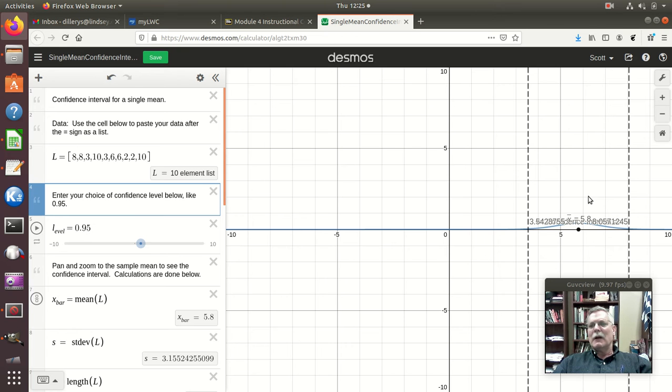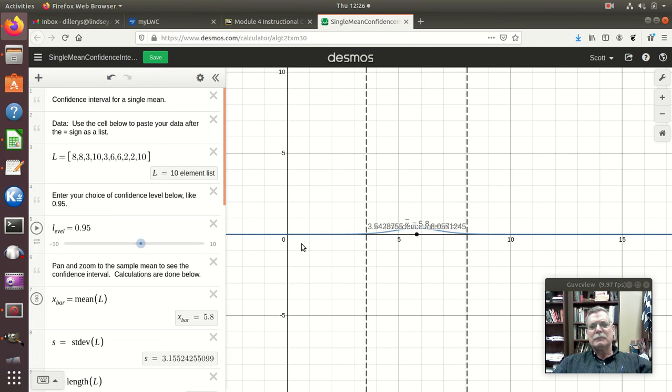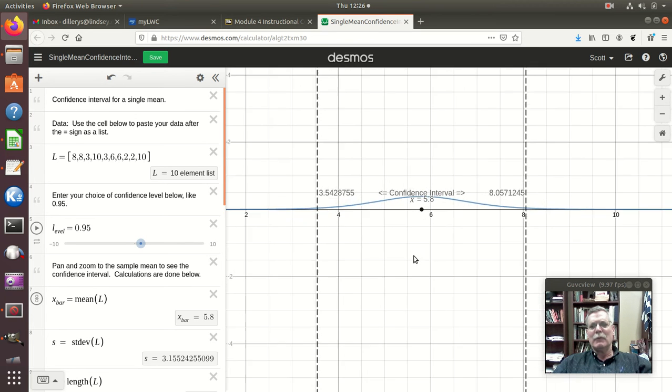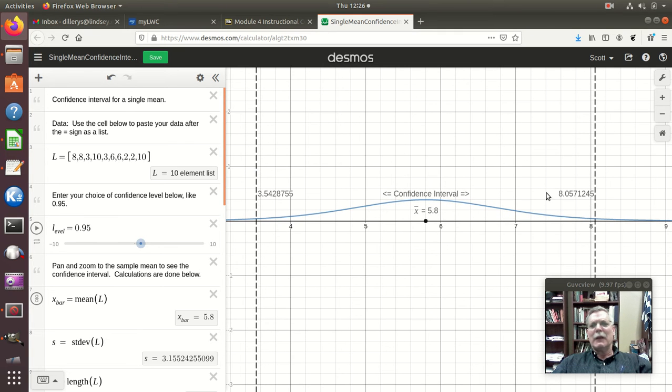And there's my confidence interval. And I may have to, you'll probably have to scroll to whatever the mean is, but see here, the mean is 5.8, so that would tell me where to try to scroll to. And pan and zoom, I guess, is really the better word than scroll. But yeah, so there's my confidence interval, and it gives me my left-hand limit and my right-hand limit. So all I have to do is give it the data.